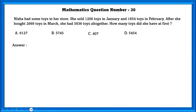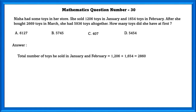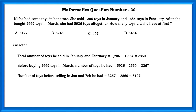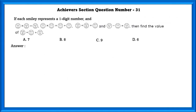Mathematics question number 30. Nisha had some toys in her store. She sold 1,206 toys in January and 1,654 toys in February. After she bought 2,669 toys in March, she had 5,936 toys altogether. How many toys did she have at first? Total sold in January and February is 2,860. Before buying in March, number of toys was 5,936 minus 2,669, which equals 3,267. Number of toys before selling in January and February is 3,267 plus 2,860, which equals 6,127.